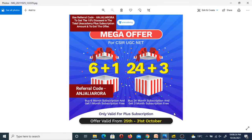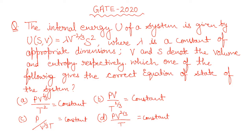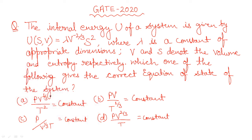Now let's start the discussion about our question of the day and how to take the steps to solve any such type of question. The question states: the internal energy U of a system is given by U(S, V) = λ V^(−2/3) S², where λ is a constant of appropriate dimension, and V and S denote the volume and entropy respectively. Which one of the following gives the correct equation of state of the system? That is what we have to find.